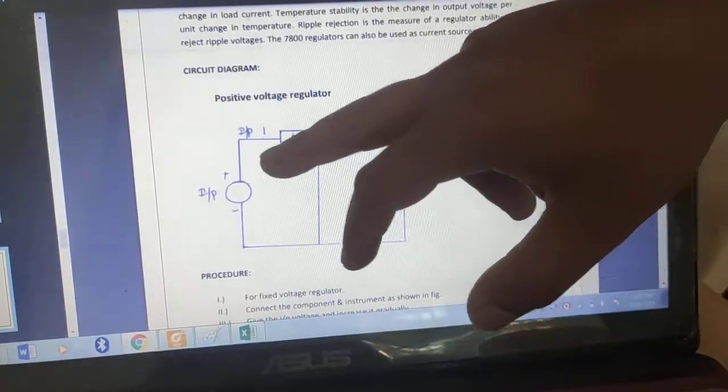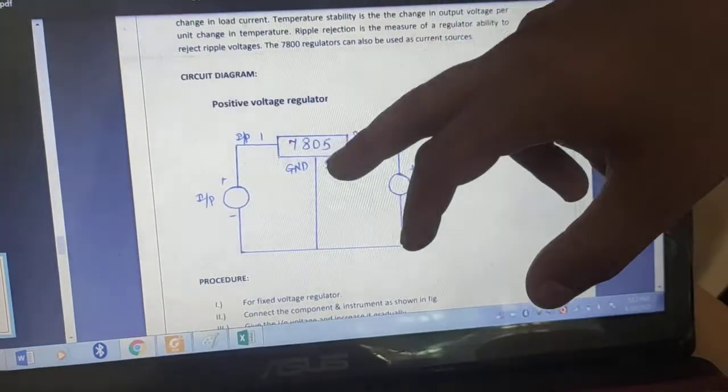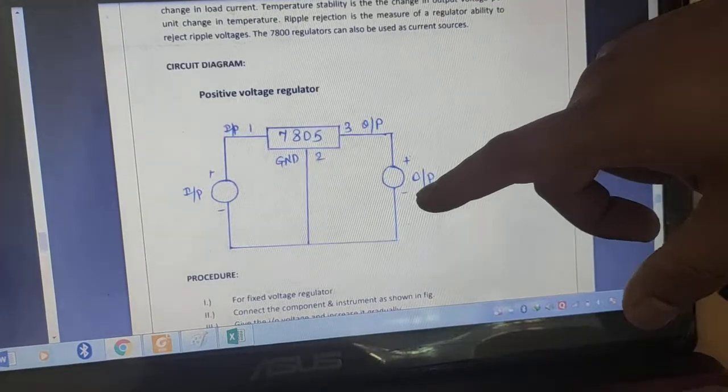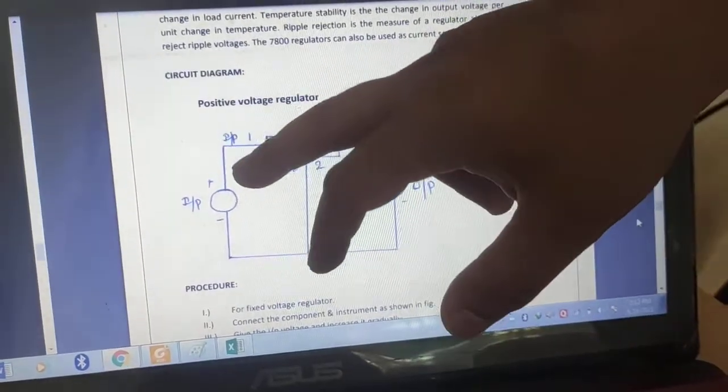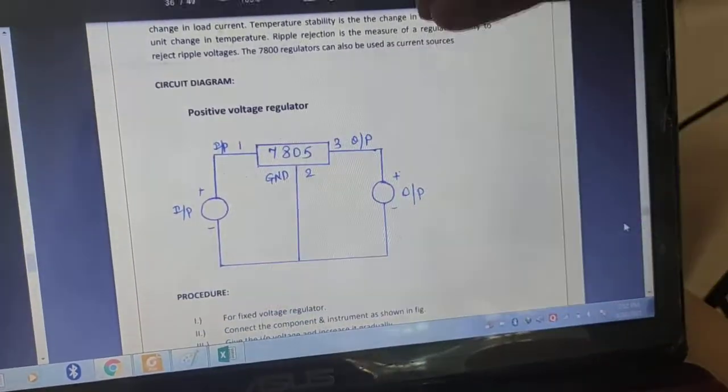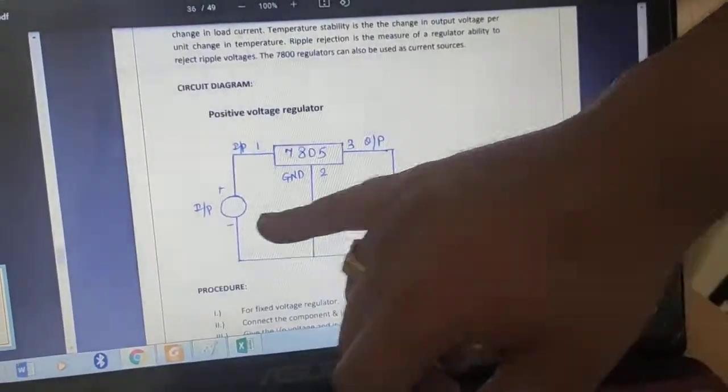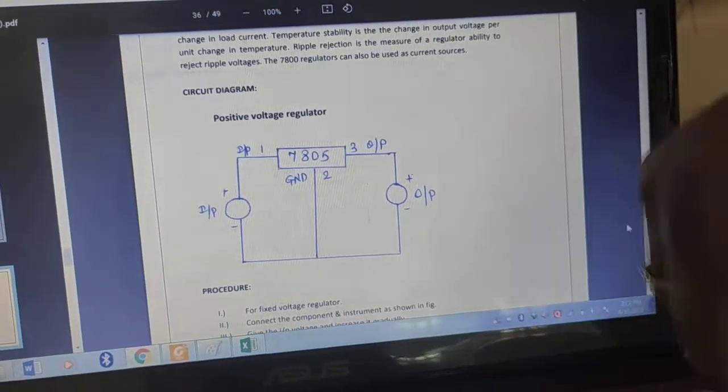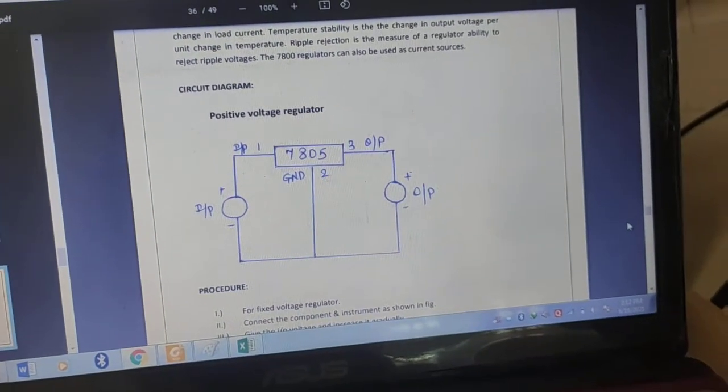So even if we increase voltage from 5 to let's say 10 to 12 volt, this IC can sustain. So up to that particular any fluctuation in the input side, we will get a constant output voltage. In this practical, we will analyze by connecting some different voltages at input side and we will try to measure what are the output voltages we are able to see.